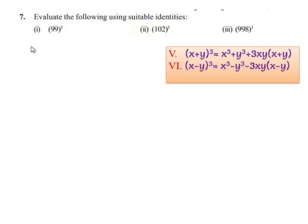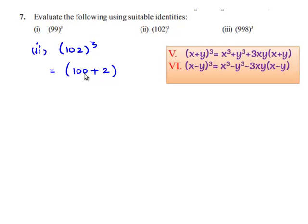Coming to the second one, which is 102 whole cube. So 102 can be written as 100 plus 2, so 102 whole cube can be written as 100 plus 2 whole cube. In order to evaluate this expression, we need to make use of the fifth identity, which is x plus y whole cube is equal to x cube plus y cube plus 3xy multiplied by x plus y.